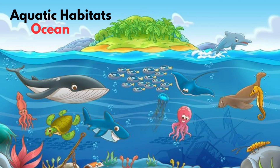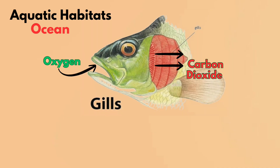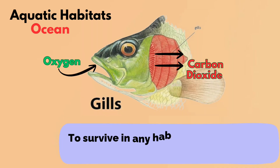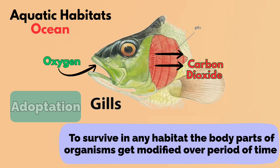Oceans are the place of living for many animals. Most ocean animals have gills or a similar structure that helps them to breathe in water. To survive in any habitat, the body parts of an organism get modified over time. This is called adaptation.